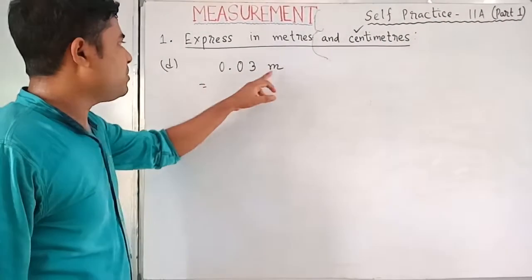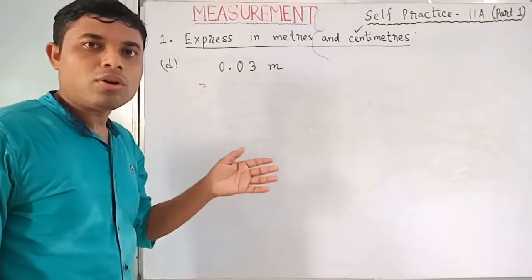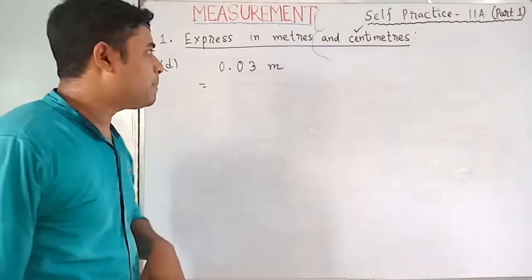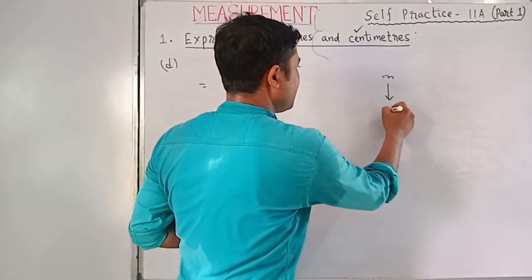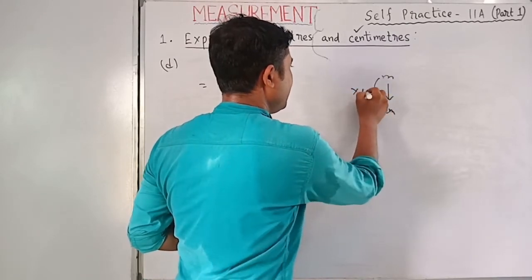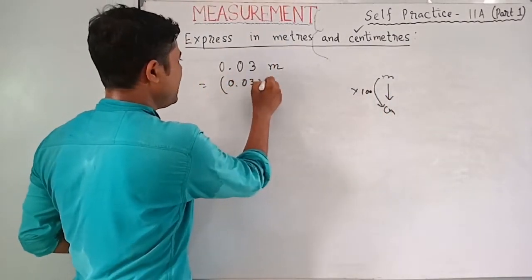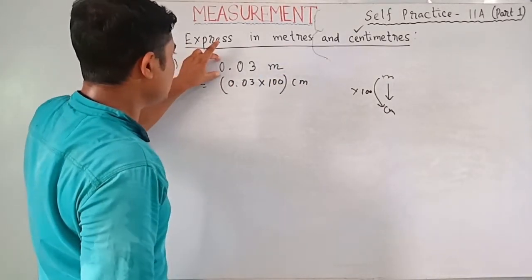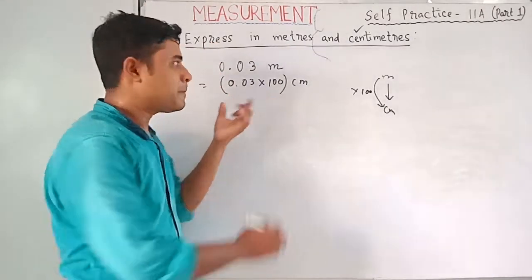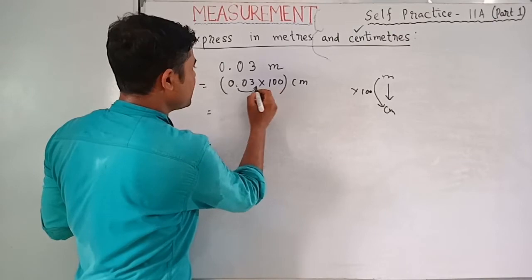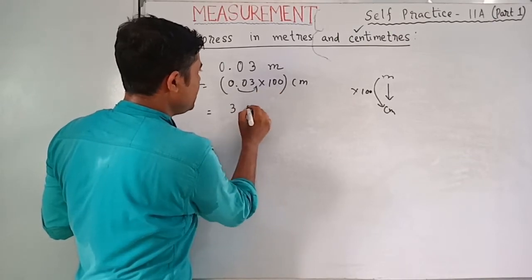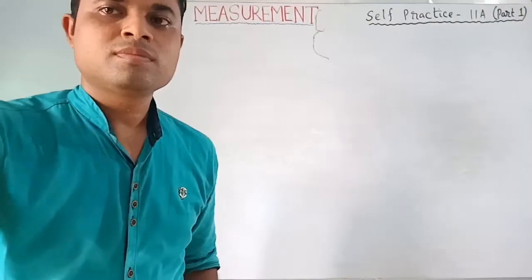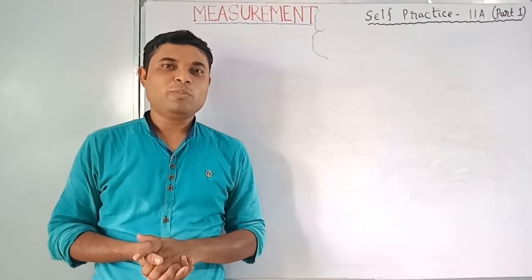Question 1d: 0.03 meters. Here the whole part is zero, so just work on the decimal part. Convert to centimeters — multiply by 100. Move decimal two places to the right: 0.03 becomes 3. Answer: 3 centimeters.